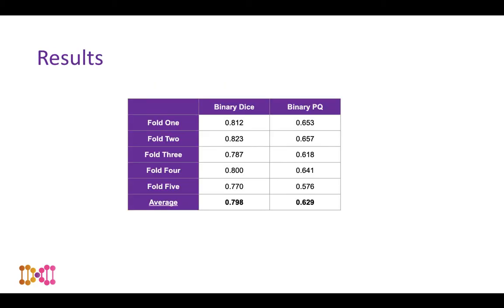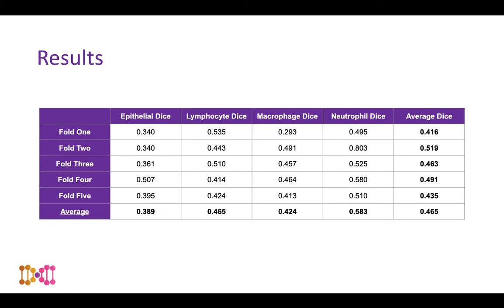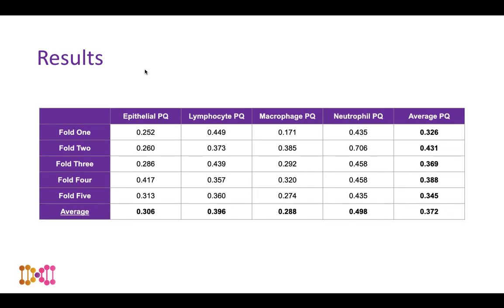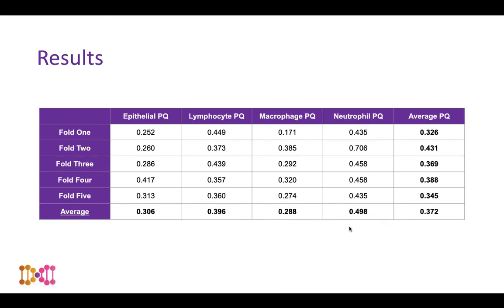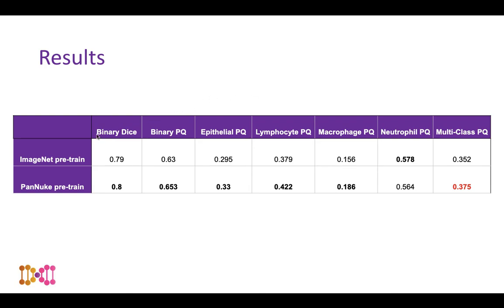Quantitatively, we reported binary dice and binary panoptic quality (PQ) scores, not accounting for cell categories. We also calculated multi-class dice scores — neutrophils appeared easiest to segment and epithelial cells most difficult. Multi-class PQ scores showed macrophages were the most difficult and neutrophils the easiest. Comparing ImageNet pre-training versus PanNuke pre-training, focusing on the final column, PanNuke pre-training gave a slight but consistent improvement in results.